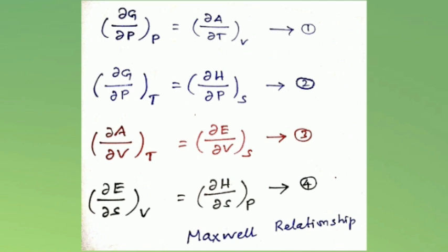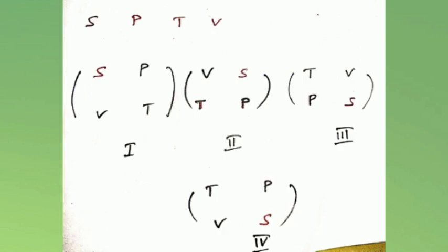Now we derive the next form — this is the easiest way using one trick. The variables involved are entropy S, pressure P, temperature T, and volume V. We arrange them as P, T, V — this is the formula framework we use to systematically derive each Maxwell relation.